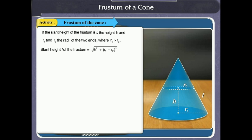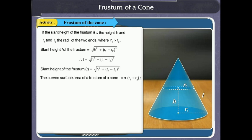The curved surface area of the frustum of the cone is equal to π into bracket r1 plus r2 into l.